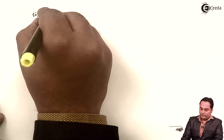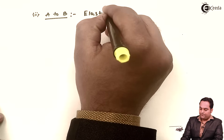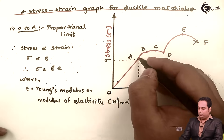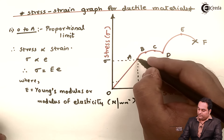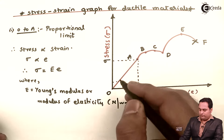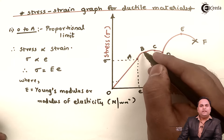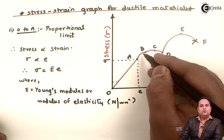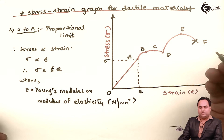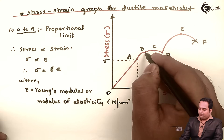Next, from A to B it is called the elastic limit. From A to B the relationship between stress and strain is a curve, so the relation is not linear as it was from O to A. However, even at point B, if we remove the load the material will regain its original shape.